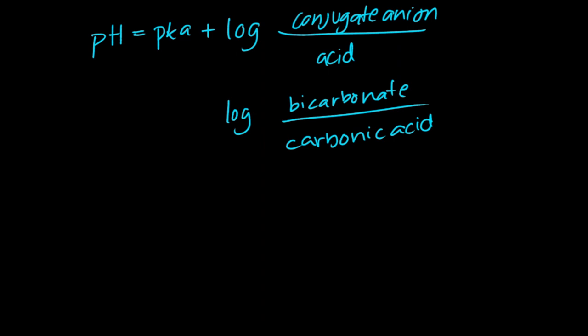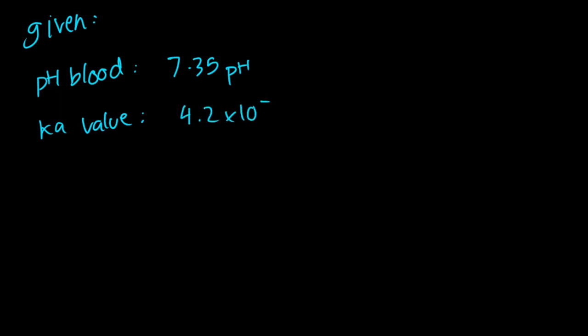Since the question is only asking for the ratio of bicarbonate and carbonic acid, we can assume that the ratio is equal to x, so we get log x. So now let's write our given values. So our given values is the pH of blood, which is 7.35 pH and the Ka value, which is 4.2 multiplied by 10 raised to negative 7.